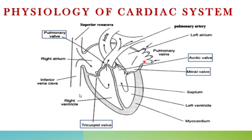On the left side, we have the mitral valve, also called the bicuspid valve. This valve allows blood to pass from the left atrium to the left ventricle.